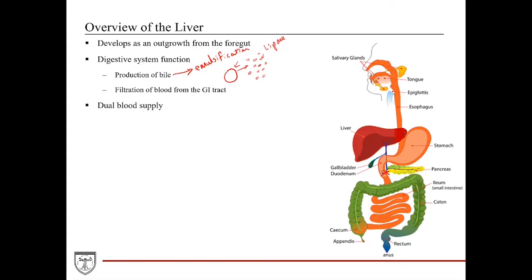The liver has dual blood supply. One comes from the hepatic portal vein, which drains the majority of tissues from the GI tract — this blood is largely low in oxygen. The other blood supply comes directly from the systemic circulation via the hepatic artery off the aorta, carrying blood that is high in oxygen content.